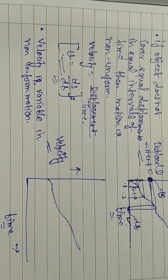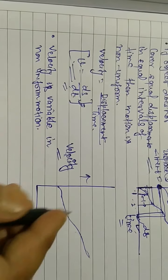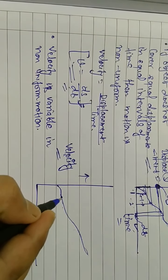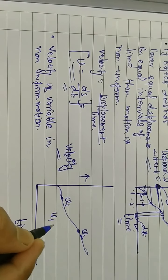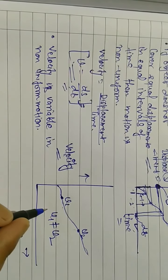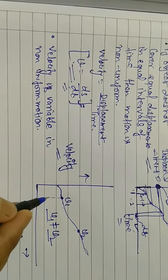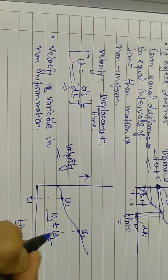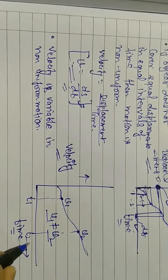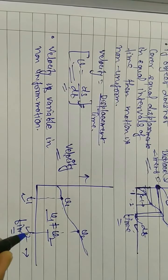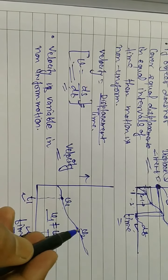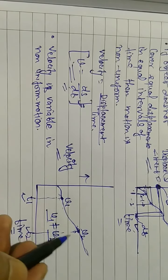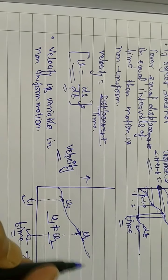I hope you understand the concept of uniform and non-uniform motion. In non-uniform motion, velocity v1 is not equal to v2 — at times t1 and t2, velocities are different. In uniform motion, v1 equals v2. So v2 minus v1 is not zero in non-uniform motion, but in uniform motion v2 minus v1 equals zero, because the velocities are the same throughout.